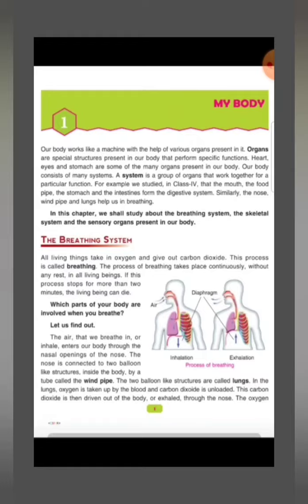Our body consists of many systems. A system is a group of organs that work together for a particular function. So a system is a group of organs that perform particular functions in our body.